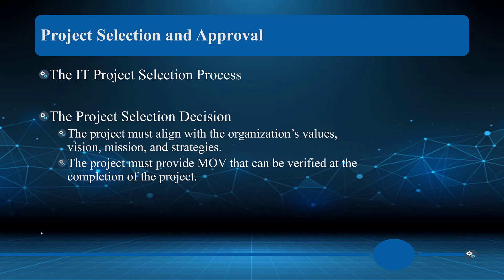To finish: the IT project selection process requires that the project aligns with the organization's values, vision, mission, and strategies, and provides a measurable organizational value (MOV) that can be verified at project completion. I'd also suggest setting a time to re-audit and confirm that the project is resulting in the expected revenues and benefits a year later — because if the market changes, adjustments may be needed. That's it for Chapter 3 — I look forward to seeing you for Chapter 4.